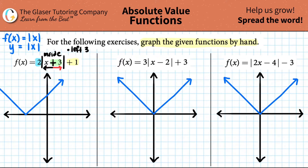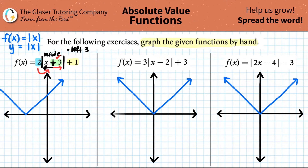Now, are we going to work with the two out front next, or the plus one? Following PEMDAS, you multiply before you add, so we have to work with the times-two next. What does having a two in front of the absolute value function actually mean?